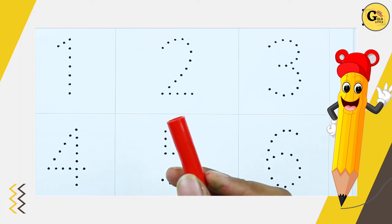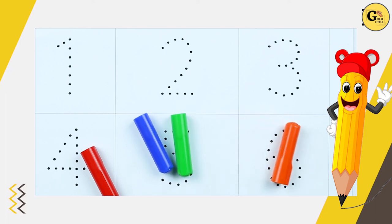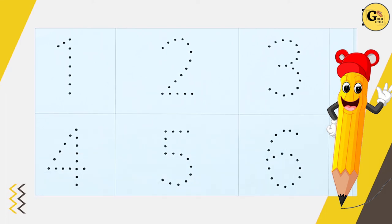Red color, blue color, green color, orange color. Let's start. How to write numbers 1 to 10?